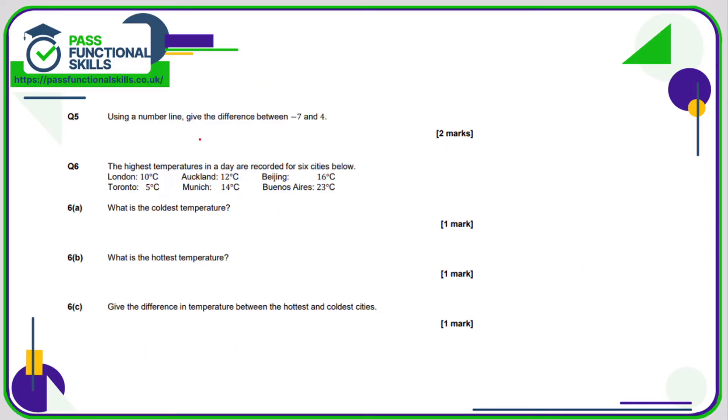Question number 5, using a number line, what is the difference between negative 7 and 4? So let's do our number line. If you want to start at 0, going up should be fairly easy and going down minus 1, minus 2, minus 3, minus 4, minus 5, minus 6, minus 7. So what is the difference between minus 7 and 4? That's a difference of 1, 2, 3, 4, 5, 6, 7, 8, 9, 10, 11. That's a difference of 11.